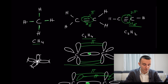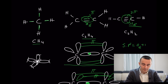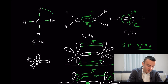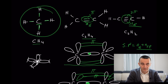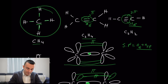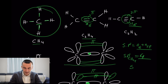But how do you find the hybridization of carbon? There is a simple trick using the steric number. The steric number is the number of sigma bonds plus the number of lone pairs around the central atom. In the first case — methane — there are no lone pairs around the carbon, so the steric number is four.